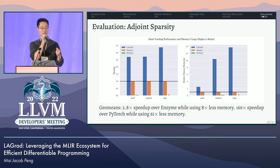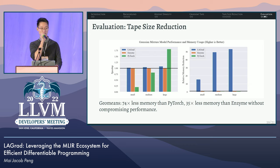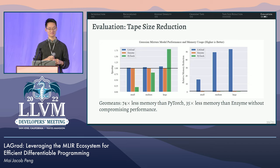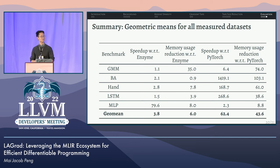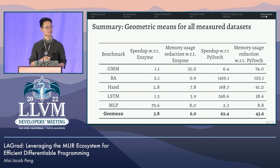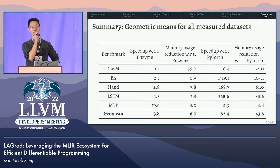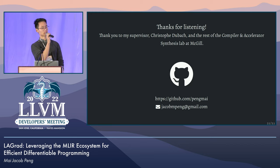Next we look at tape size reduction. LA Grad and Enzyme have roughly on-par performance, but memory usage is greatly reduced: 74× less than PyTorch and 35× less than Enzyme, with no compromise in performance. Finally, the table shows geometric means for all real-world benchmarks evaluated — each entry is a geo-mean over different datasets, and the bottom row is a geo-mean over the columns for a general sense of overall performance. By doing compile-time AD and leveraging high-level information, LA Grad is able to outperform existing systems, often by a wide margin. Thank you to the organizers, the program committee, my supervisor, and all of you for listening.